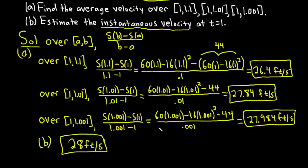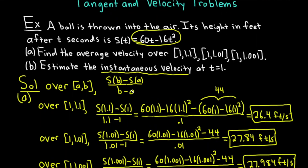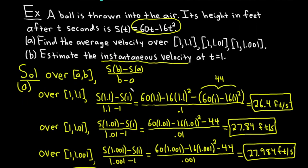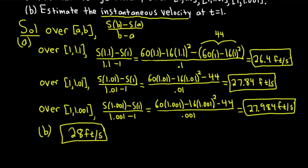Hopefully this video has been helpful. By the way, for tangent lines it's exactly the same — instead of average velocity, you have the slope of the secant line, which approaches the slope of the tangent line. Average velocity is a little tricky because the formula is something people always forget. Just remember: you have to use your position function for average velocity. Later when you learn more calculus, you'll discover the velocity function, but for now, average velocity uses the position function.